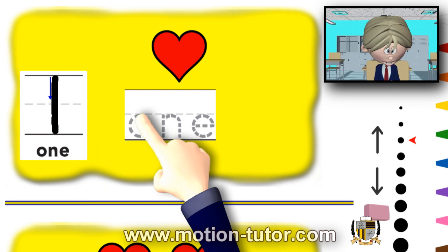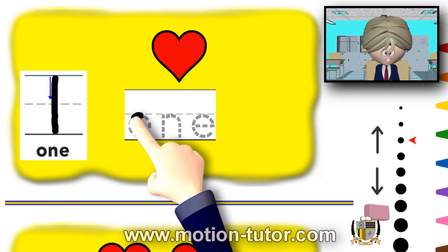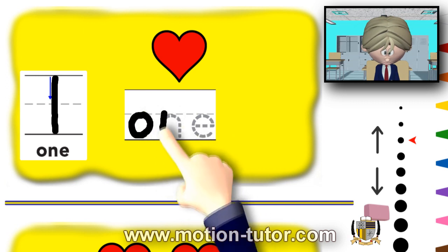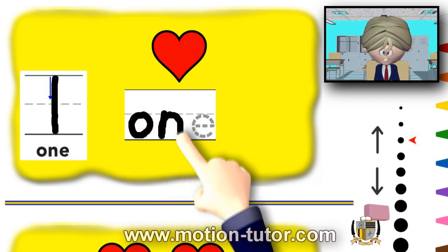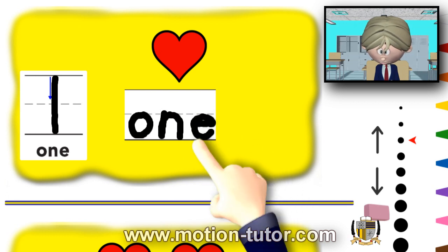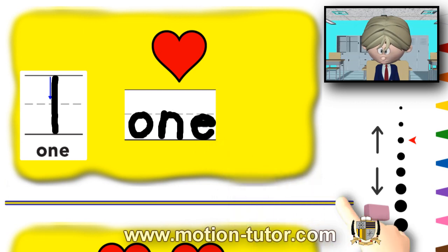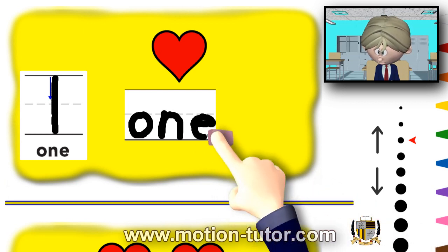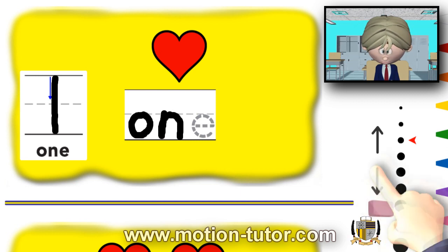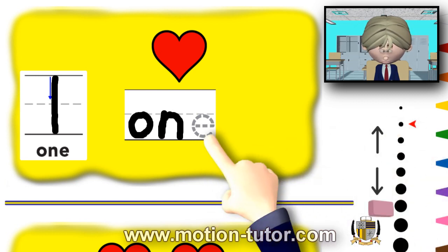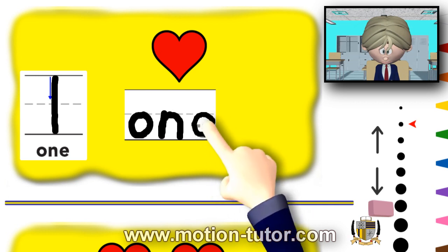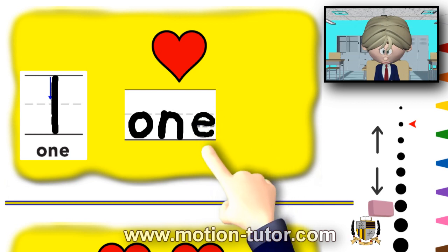And now, we're going to write the word 1. And it's the letter O, the letter N, and the letter E. Let me try this E again. There we go.